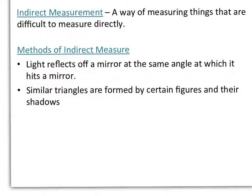Indirect measurement is a way of measuring things that are difficult to measure directly. Methods of indirect measurement could be light reflects off a mirror at the same angle at which it hits a mirror, or similar triangles are formed by certain figures and their shadows.